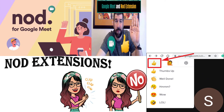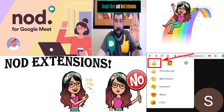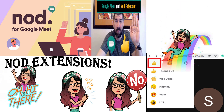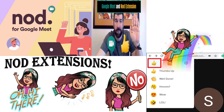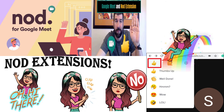Lastly, we have the fifth extension, and it is called Nod — Nod for Google Meet. Nod is very useful because it shows non-verbal reactions, where your pupils or participants can wave, clap, say no, or laugh out loud without interrupting the speaker. That is the Nod extension for Google Meet.